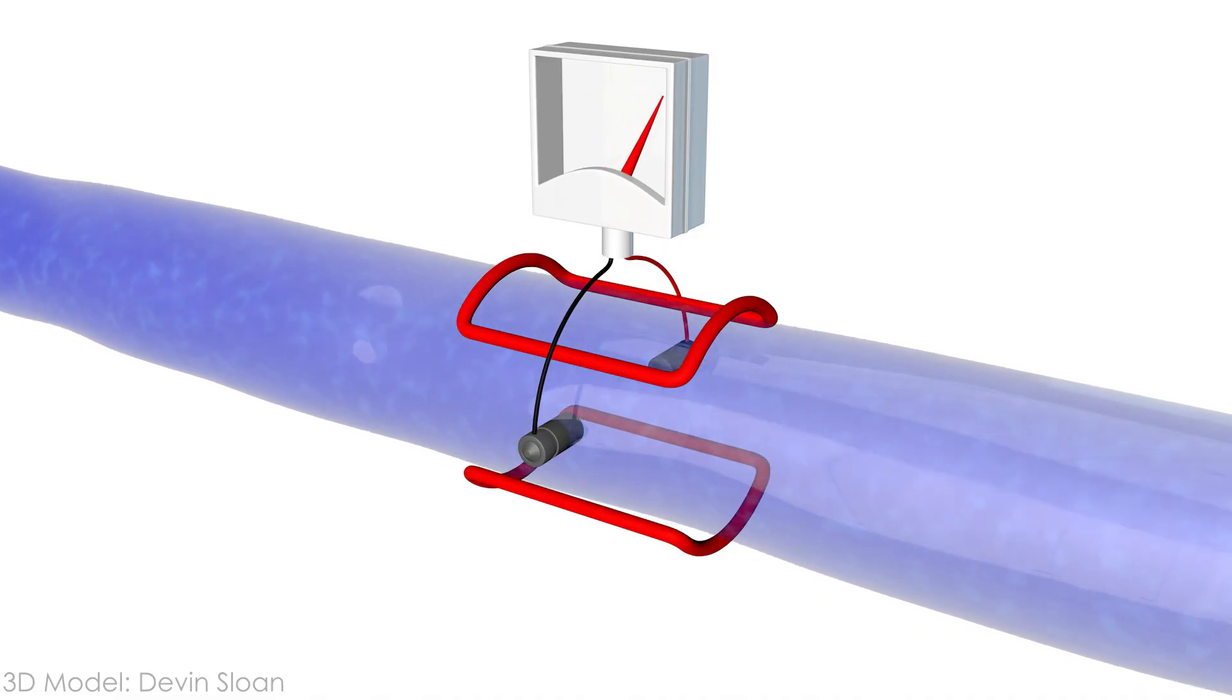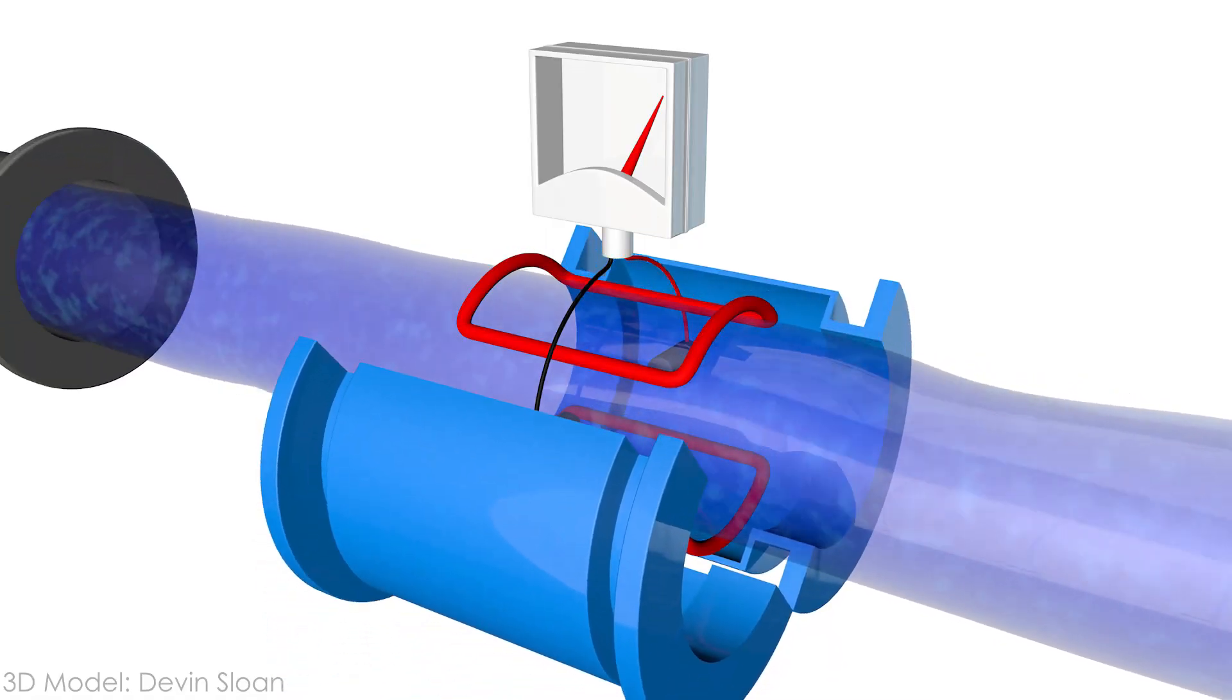Once you know the velocity of the fluid, you can calculate flow using the cross-sectional area of the pipe. It seems pretty straightforward, but let's see if it really works.